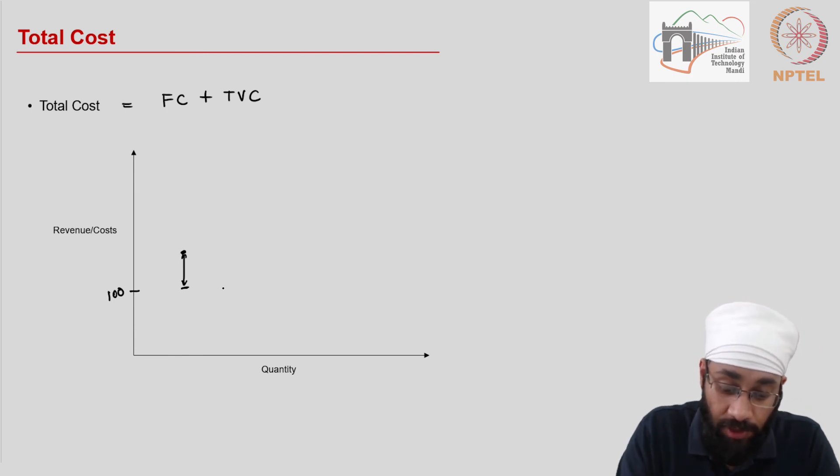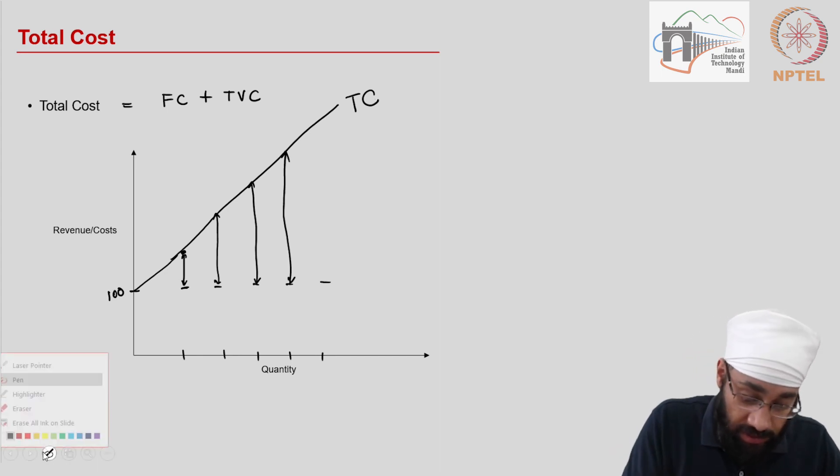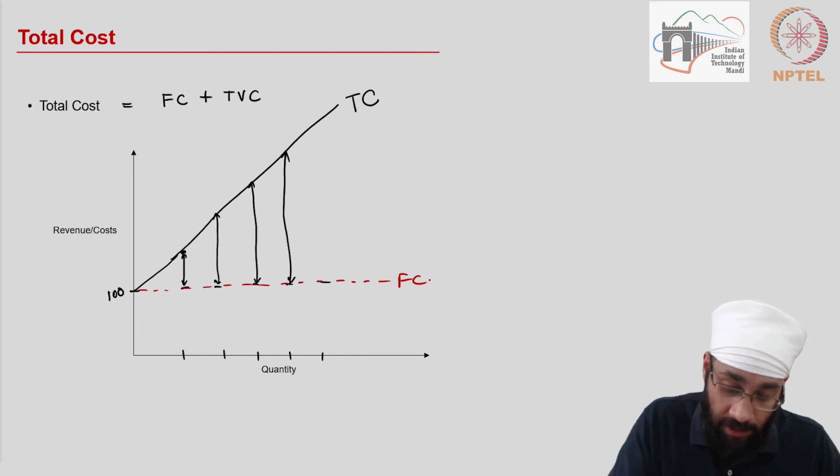And then for every new level of production, fixed cost is always going to be the same and the variable cost is going to depend upon the level of production that you want to be at. Therefore, total cost - not the variable cost - total cost of the business is going to look like this.